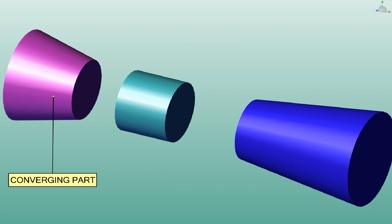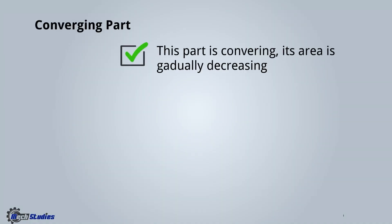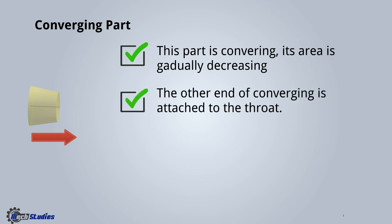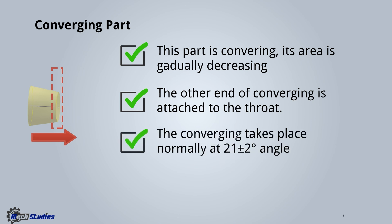Let's see the basic characteristics of the converging part. This part is converging and its area is gradually decreasing. The other end of the converging part is attached to the throat of the Venturimeter. The converging takes place normally at 21 ± 2 degrees angle, so the range is 20 to 23 degrees.